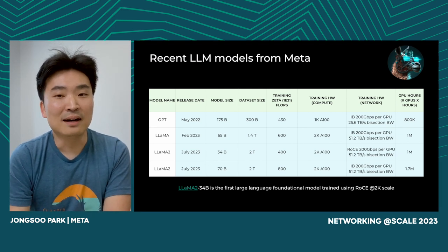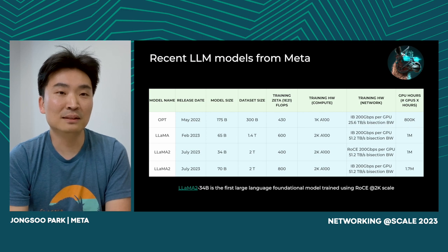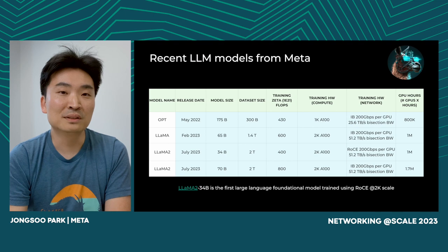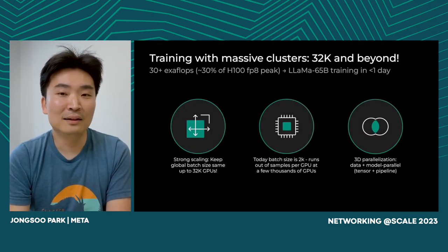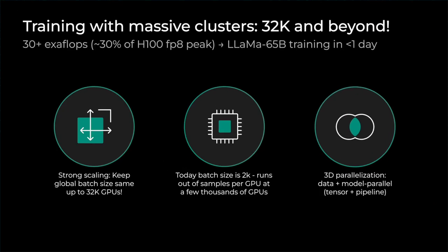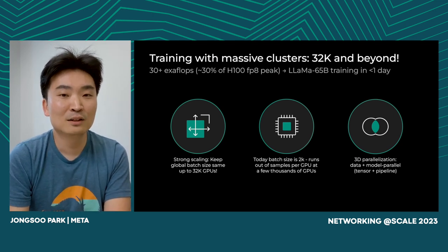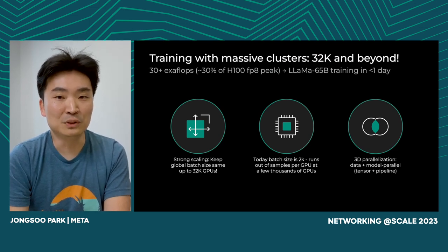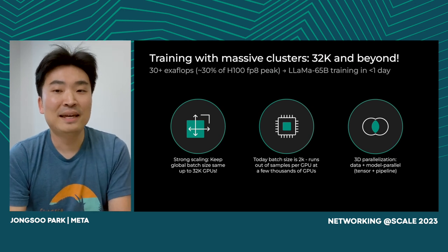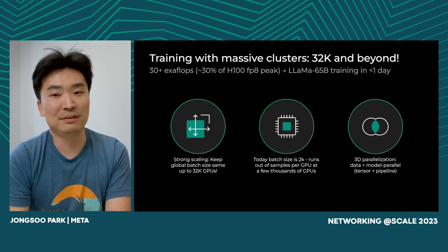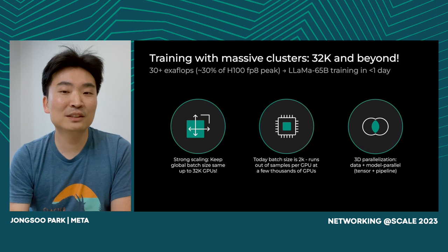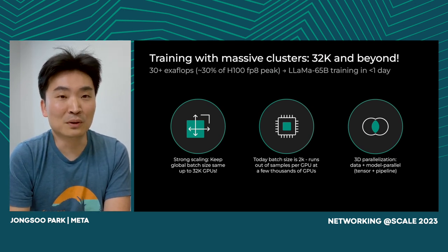Model complexity and the amount of data we feed into these models have been increasing exponentially, and we don't expect that trend to stop anytime soon. This is why we need a lot of GPUs. We are using about 2,000 GPUs today, but we don't think that's going to be enough going forward. That's why we are thinking about 32,000 GPUs and even beyond — our vision is achieving more than 30 exaflops, which corresponds to about one third of the theoretical peak compute provided by 32,000 GPUs. This will enable training LLM models in less than one day instead of more than one month.